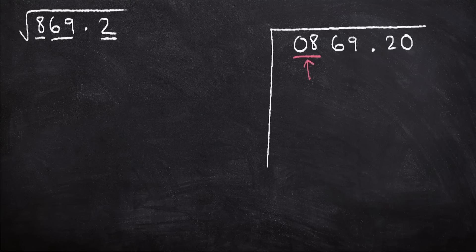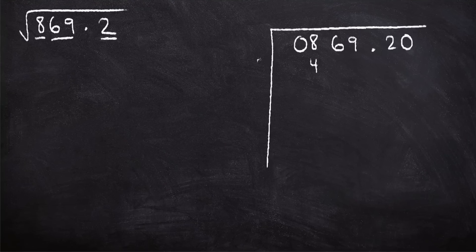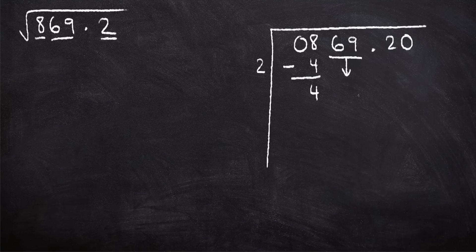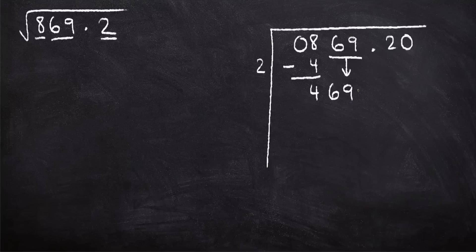What is the largest square number that is less than 8? The answer is 4. So we're going to put 4 here and then square root it and put it alongside here. Now we're going to subtract this 4 from the top number, and we should end up with 4. The next step is we're going to drop down this second pair, 69, to stick onto the end of the 4. So we end up with 469.